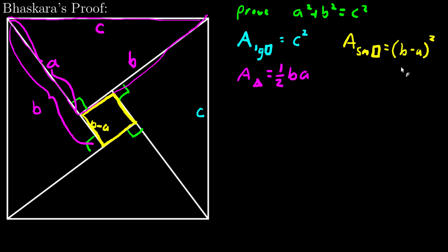And I can expand that out. Multiply b times b, get b squared. b times negative a is negative ab. Negative a times b is negative ab. So I get minus 2ab. And then negative a times negative a is plus a squared.